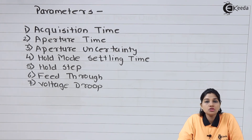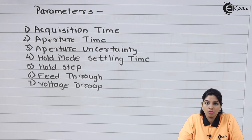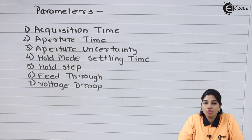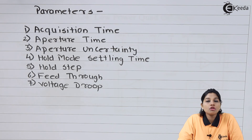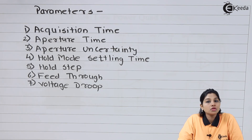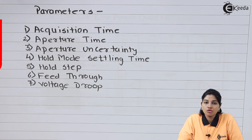These are the parameters used for measuring or judging the performance of a sample and hold circuit. On the basis of these parameters, we can use sample and hold circuits for various applications — such as analog to digital converters, pulse modulation systems, analog multipliers, and many other circuits. I hope you understand the topic of performance parameters of sample and hold circuit. Thank you very much for watching this video.